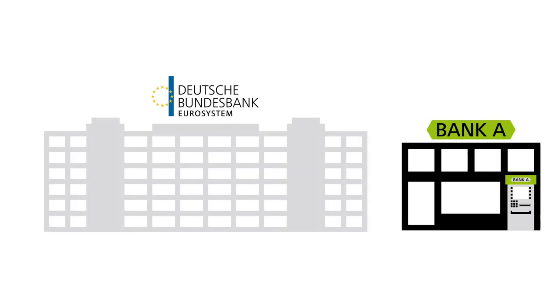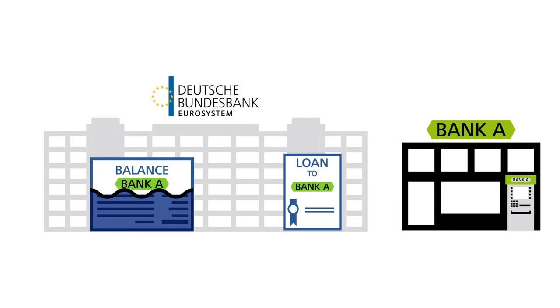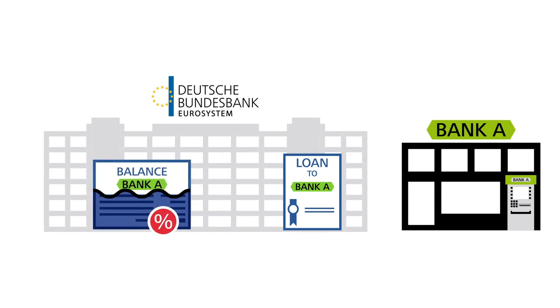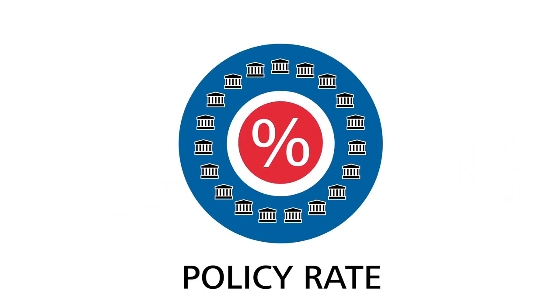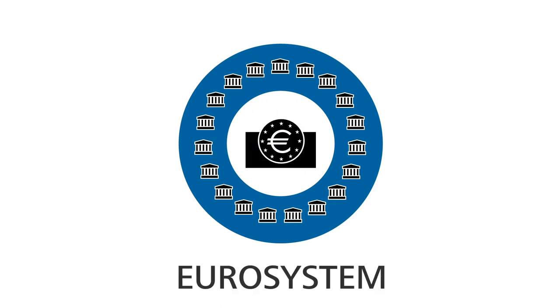But how do the commercial banks obtain it? As previously mentioned, the central bank can extend loans to commercial banks. The commercial banks are required to pay interest on these loans at the ECB's policy rate. This interest rate, in turn, serves as the lever for the Eurosystem's monetary policy.